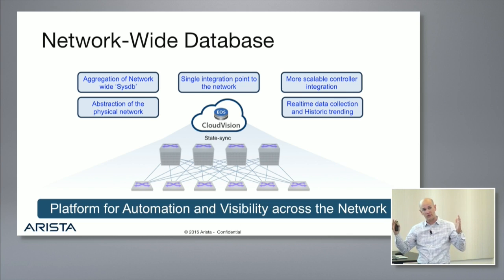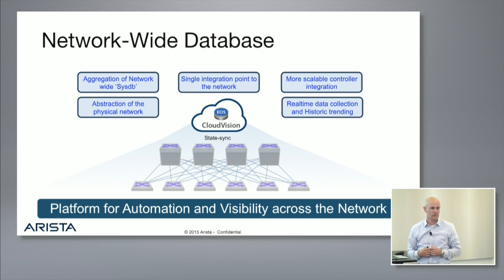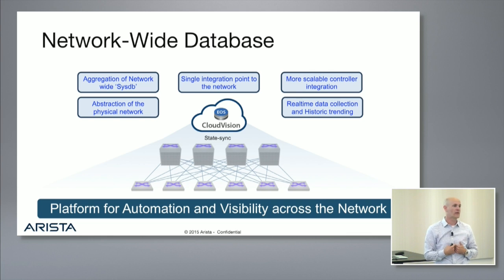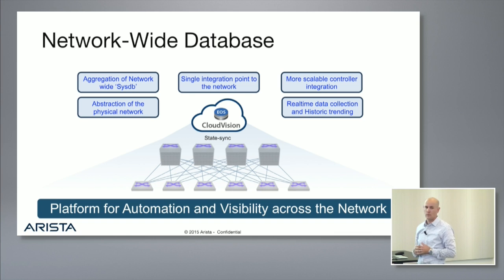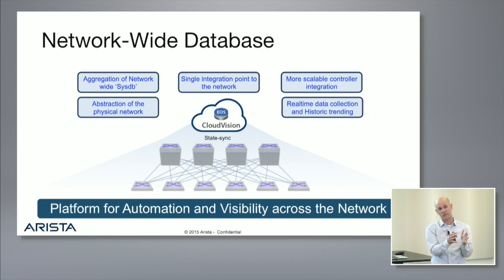The northbound infrastructure — cloud orchestrators and similar systems — when they need to talk to the network infrastructure, they don't need to be as aware of the physical network details. It makes their lives easier; they can focus on what they do best and let the networking software focus on what it does best. This is a more scalable way to integrate the physical networking infrastructure with controllers. On top of that, we not only have a real-time view of the data but a historic view as well — so we can look back over time, see what the network looked like at a particular point in time, and even roll the network back to those states.